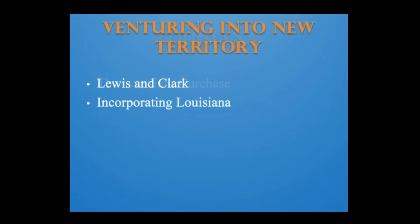Soon after purchasing Louisiana, Jefferson dispatched two fellow Virginians, Meriwether Lewis and William Clark, to explore it. They were to conduct scientific and commercial surveys in order to find ways to exploit the region's resources, develop trade with Indians, and find a commercial route to the Pacific Ocean that could foster trade with Asia. In two years, and guided for a large segment of the journey by Sacagawea, a 15-year-old Shoshone Indian woman, Lewis and Clark traveled all the way to the Pacific, reaching it in the area of today's Oregon, and back. Though they did not find a commercial route to Asia, their success reinforced the belief that America's territory would one day extend to the Pacific Ocean.